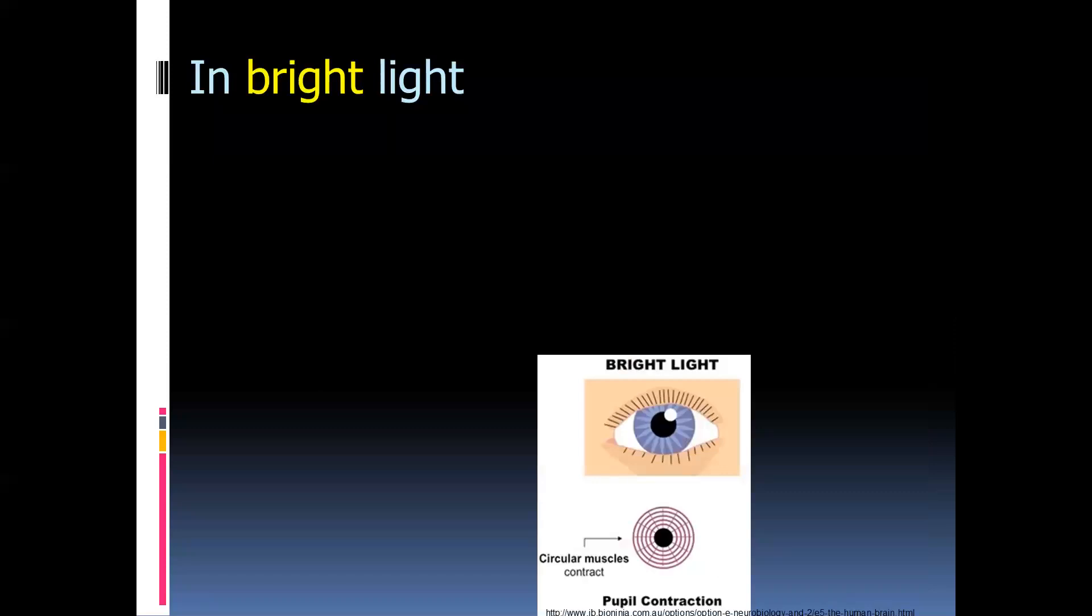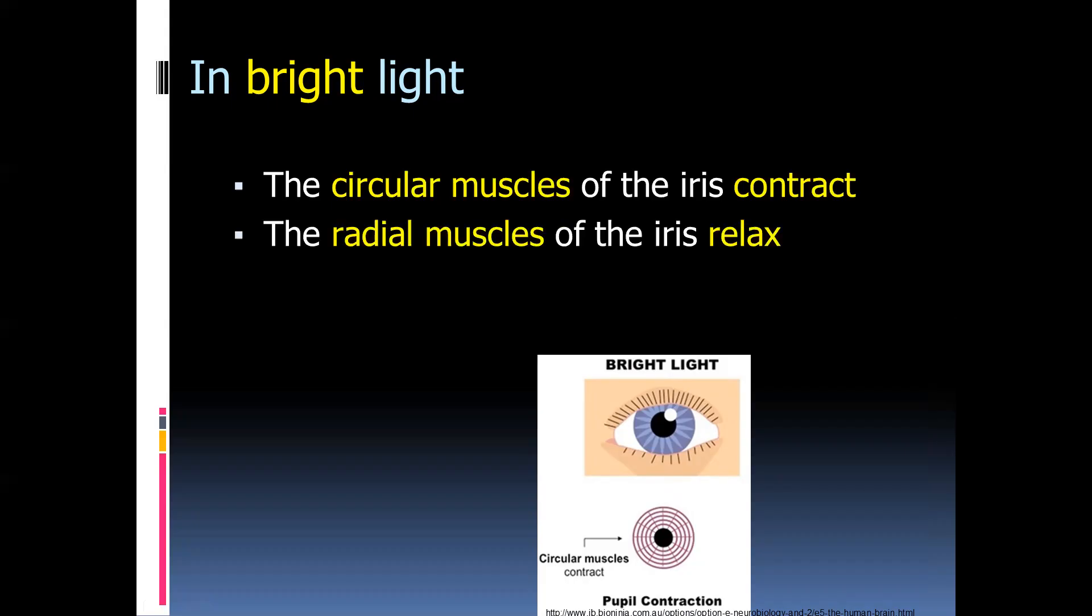So what is the mechanism that brings about this change in pupil size? Basically, we need to understand that the iris is made up of two different types of muscles: the circular muscles, which are in a circular arrangement, and the radial muscles. The radius is a line from the center of a circle to the circumference. These two muscles work together to control the size of the pupil.